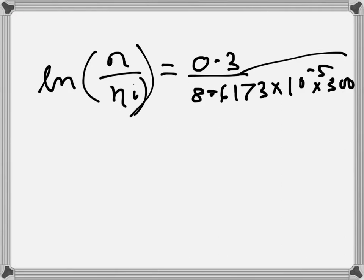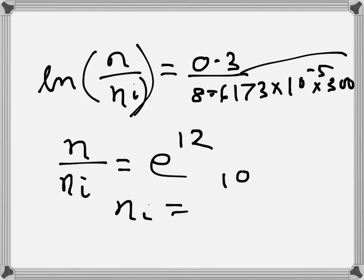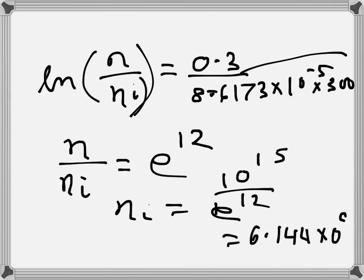8.61 Boltzmann constant, 6173 times 10 to the power minus 5 into 300, and that will give this value. Then we can write NI and this will be exponential, e to the power 12. So our NI becomes 10 to the power 15 divided by e to the power 12, so that's 6.144 into 10 to the power 9.